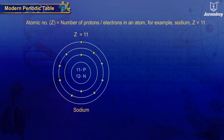Atomic number, represented by Z, equals the number of protons or electrons in a neutral atom. For Sodium, Z equals 11.